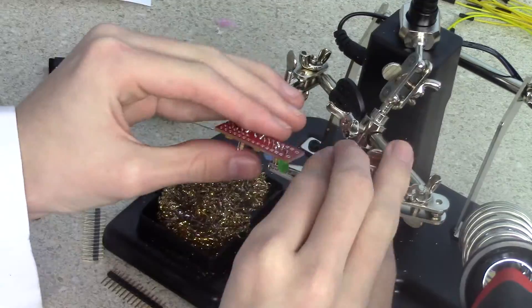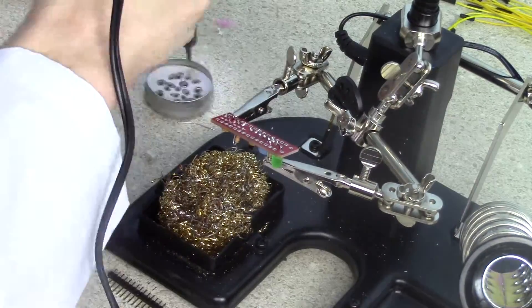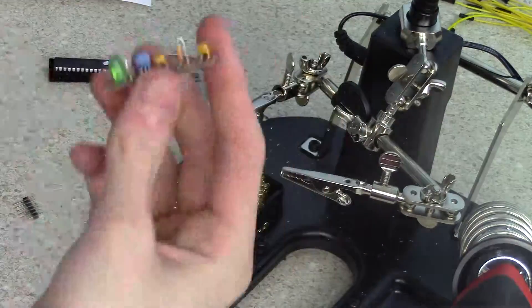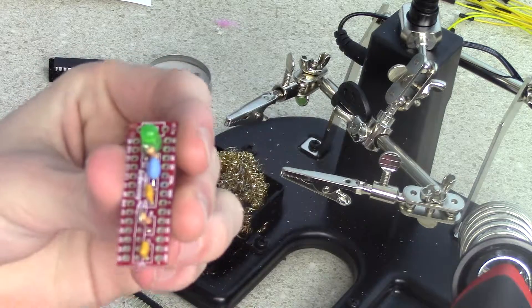Next, solder the blue capacitor into the three-hole slot in between the leftmost capacitor and the 4.7K resistor.